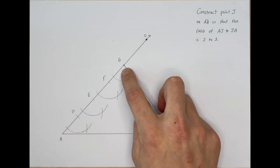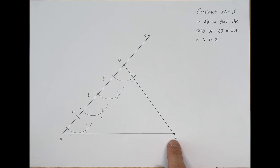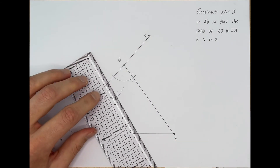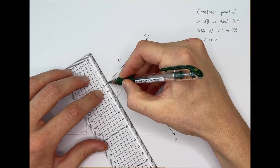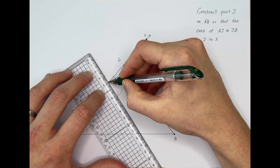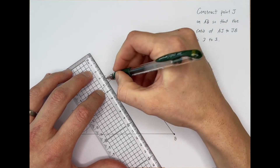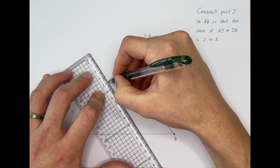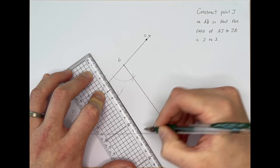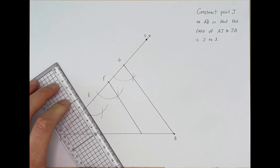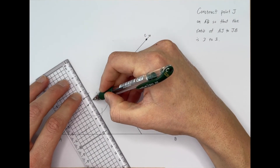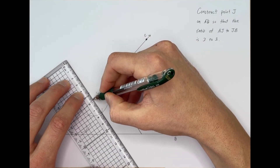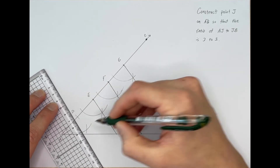We have now copied angle AGB. Taking our straight edge and placing it on vertex F up here, we draw our segment all the way to segment AB. We do the same thing for the arc we created at E, drawing that segment down, and then the last one here at D.